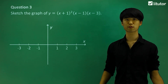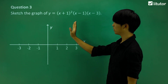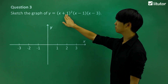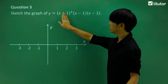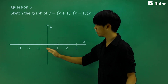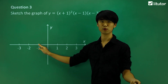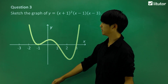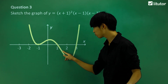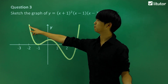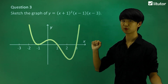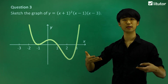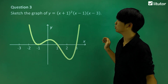Moving on to question 3, we're going to start working with double roots. There are four roots, but one of them happens to be repeated. The first one is a double root at x equals negative 1. A double root means that instead of just cutting through the graph, it's going to bounce off the x-axis at that point. It's a positive graph, so the quartic has a nice W-looking shape.